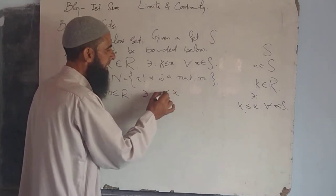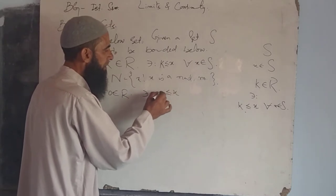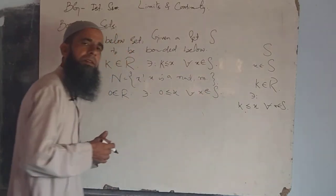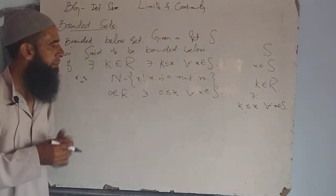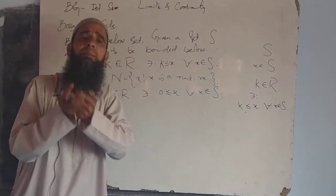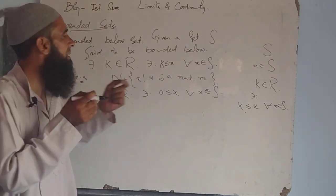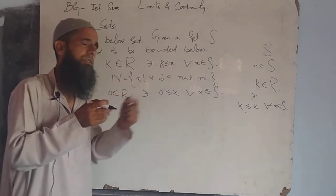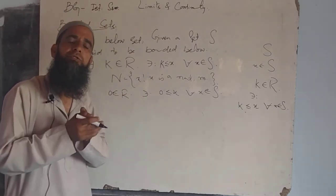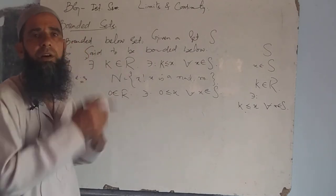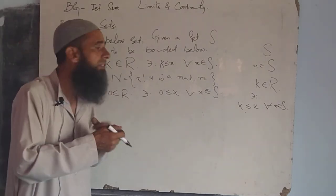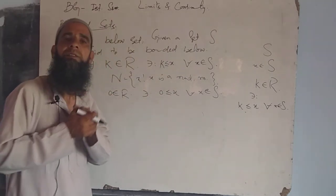For all X belonging to S, even minus 1 belongs to R — minus 1 also exists — as well as minus 100, minus 200, and so on. We have infinitely many real numbers for which this condition is satisfied.